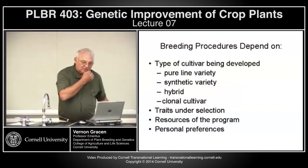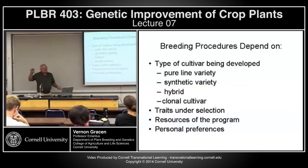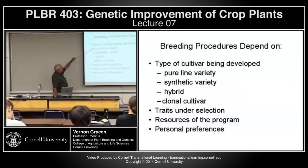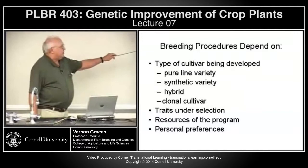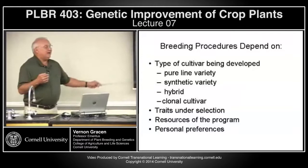The types of cultivars primarily developed are pure-line varieties, synthetic varieties, varietal hybrids, F1 hybrids, and clonal cultivars. The breeding procedures not only depend on what type of variety is your endpoint but also on the traits most important to you — yield, quality, disease and insect resistance, stress tolerance, the resources you have in your program, and often personal preferences.